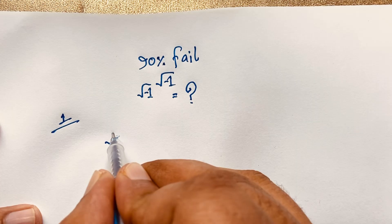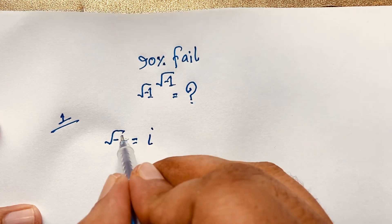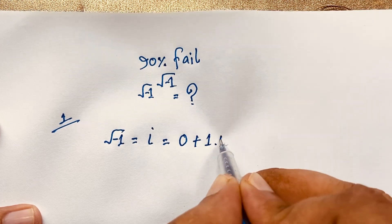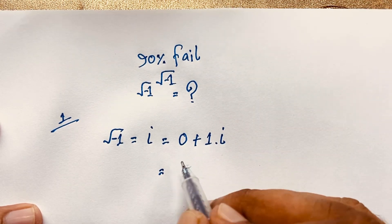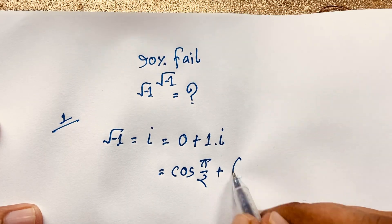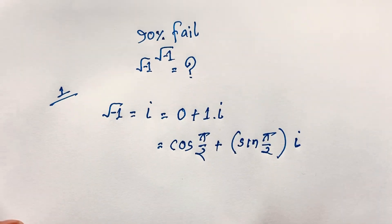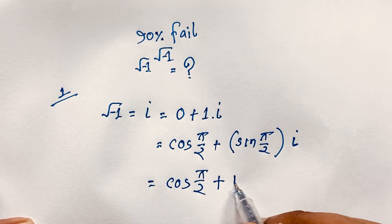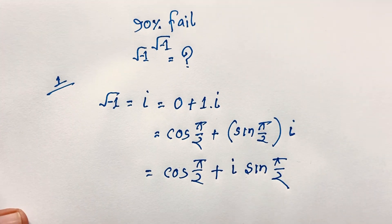First, square root of negative one equals i, according to complex number rules. So i equals zero plus one·i. We can write this as cos(π/2) plus i·sin(π/2), since cos(π/2) = 0 and sin(π/2) = 1. So i equals cos(π/2) + i·sin(π/2).